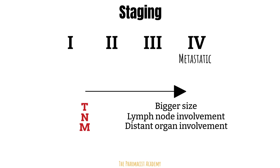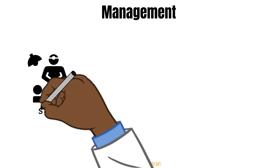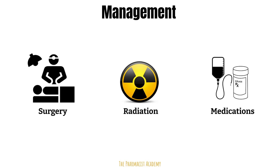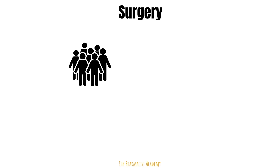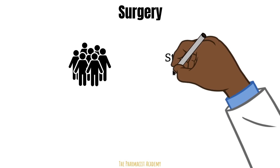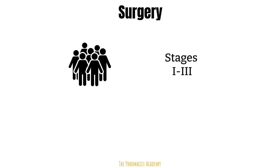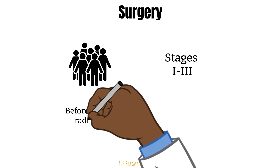Management varies from stage to stage. Patients may receive surgery and/or radiation and/or medications. I use the term medications instead of chemotherapy because a lot of patients are now on more targeted therapies. Most patients with solid tumors will receive some form of surgery, especially when the cancer is not too big and hasn't spread — so anywhere from stages 1 to 3 usually. In stage 4 cancer, the tumor has spread to distant organs, so it's impossible to remove all the cancer. Therefore, surgery is not recommended and the goal is palliative care.